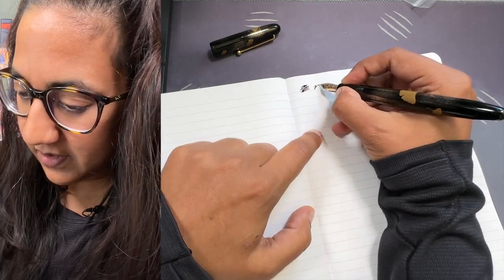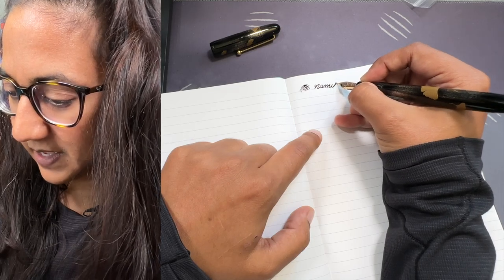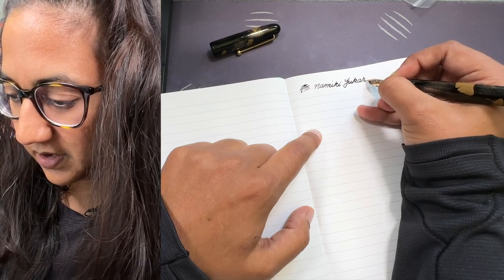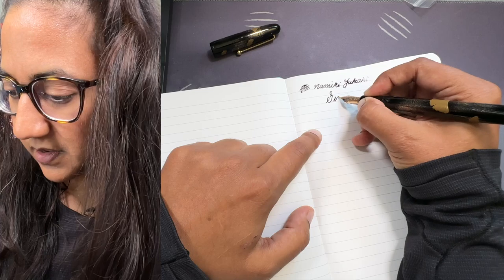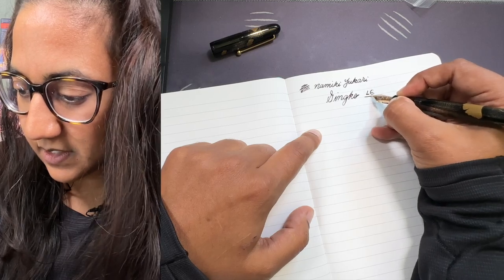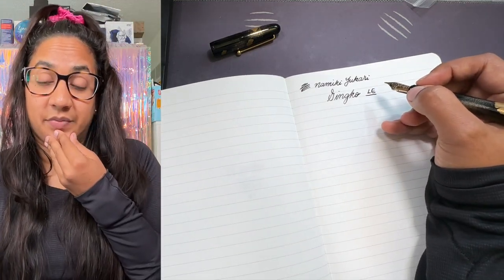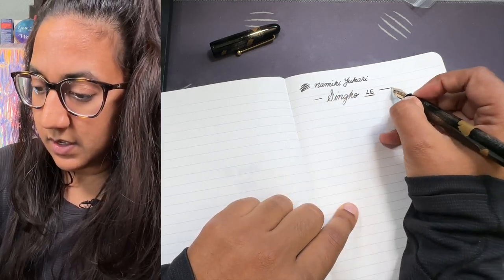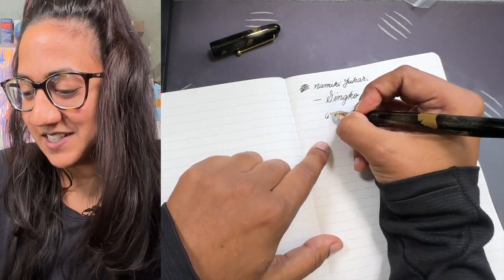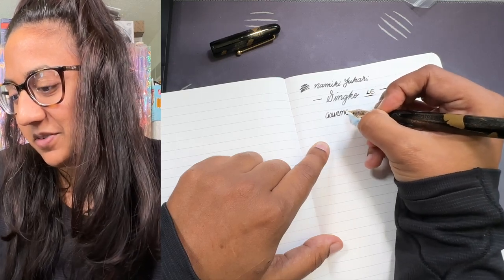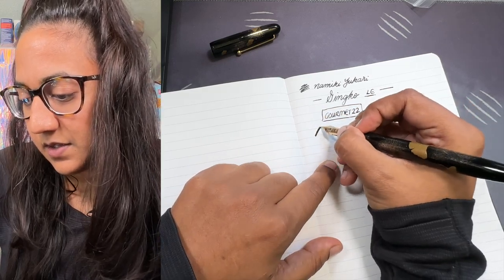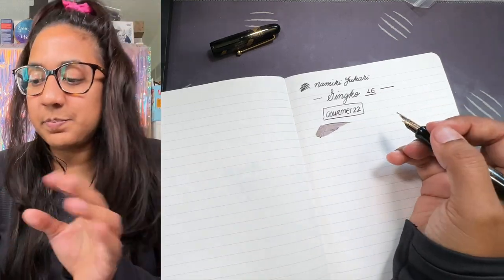We have the Namiki Yukari, this is the Ginkgo limited edition. The retail price for this is $1,700 US. I did use my own discount code at Pen Chalet, so you can do that too. It's 10% off with Gourmet22. The ink, look, it's perfect. These nibs are just incredible.